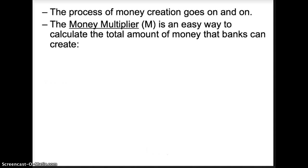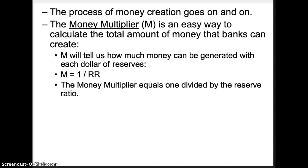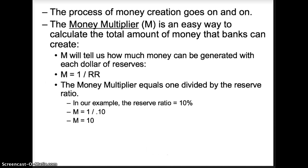The process of money creation goes on and on. We could draw another 20 T-accounts, but we'll make life easy by using the money multiplier — an easy way to calculate the total amount of money that banks can create. The money multiplier tells us how much money can be generated with each dollar of reserves. The money multiplier equals 1 divided by the reserve ratio, or M = 1 / RR. In our example, the reserve ratio is 10%, so M = 1 / 0.10 — be sure to change the percentage into a decimal. The money multiplier equals 10, meaning for every $1 initially deposited, the fractional reserve system will create $10.